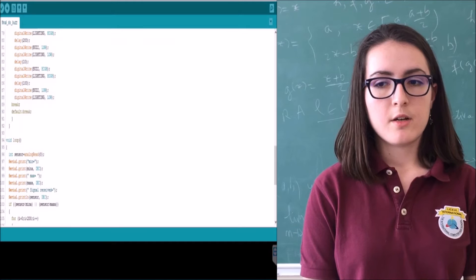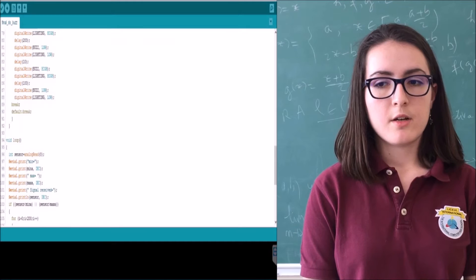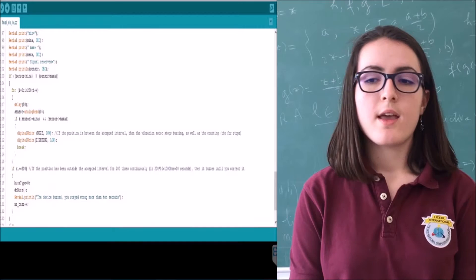For a better understanding of the values, we are using serial monitor from Arduino to show these minimum and maximum values as well as the value coming from the sensor at that moment at the speed of one reading per 50 milliseconds.